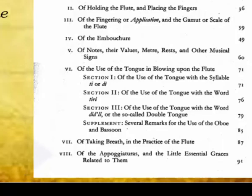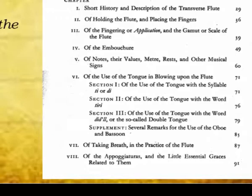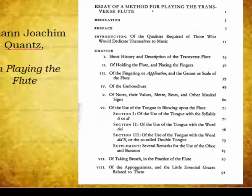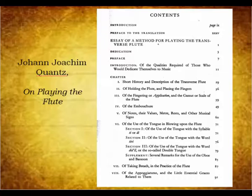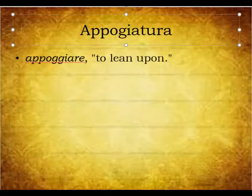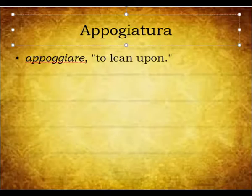Spending some time recognizing appoggiaturas will help you not only perform music by Mozart, but also compositions throughout the 18th and 19th centuries, and even some in the 20th century. In order to understand how to phrase this music, you must recognize appoggiaturas. Appoggiatura comes from the Italian verb appoggiare, which is translated into English as 'to lean upon.' These are metrically stressed notes, usually occurring on downbeats. These notes are dissonant and resolve downwards.